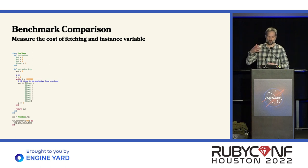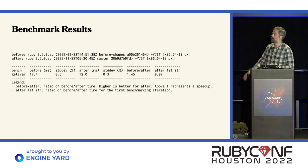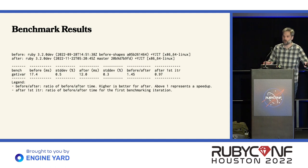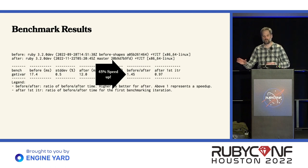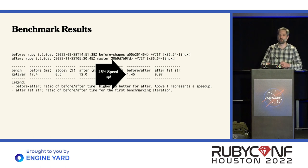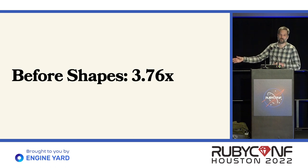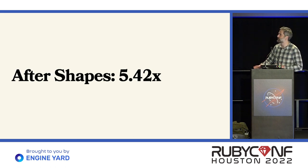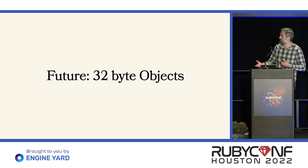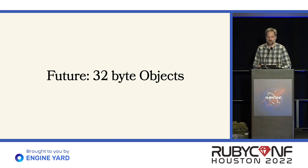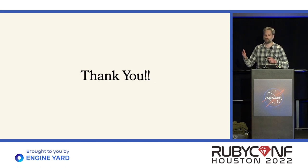For benchmark comparison, measuring the cost of fetching an instance variable inside the JIT: comparing YJIT before object shapes versus YJIT after, we're about 45% faster with the object shapes technique. And if we compare the JIT compiler to regular Ruby, it's 3.7 times faster before shapes, and after shapes it's now 5.4 times faster to read an instance variable. In the future, I'd like to use this technique possibly for reducing the size of our objects to 32 bytes. TLDR of this presentation: object shapes lead us to fewer checks and faster code. Thank you.